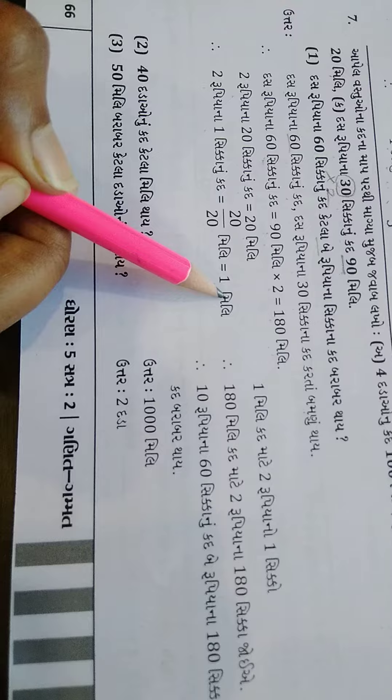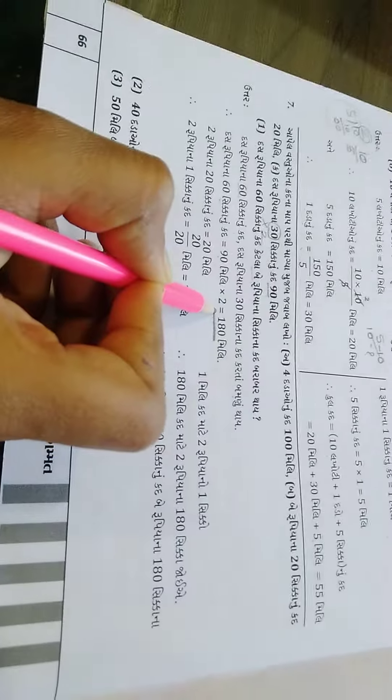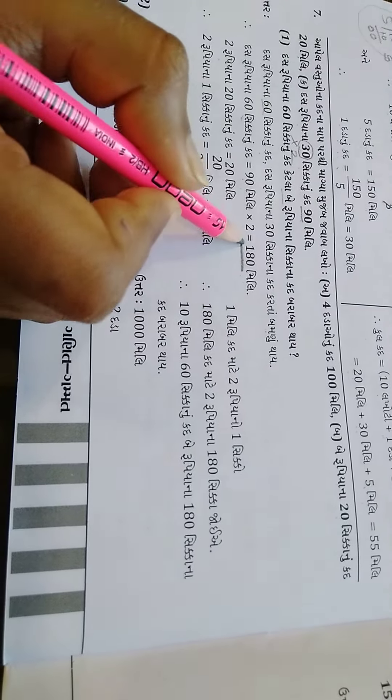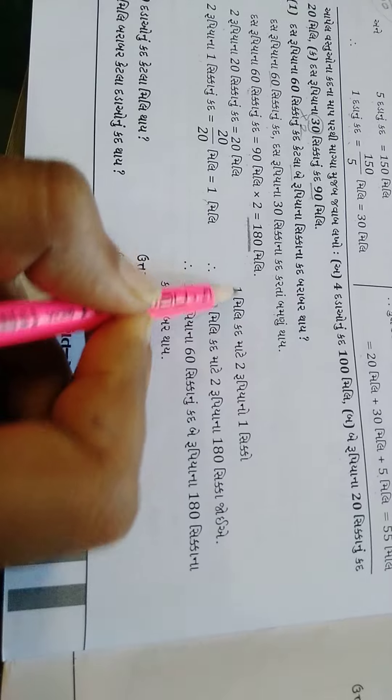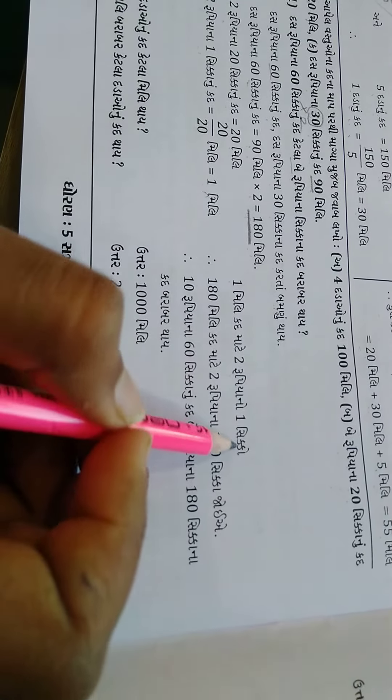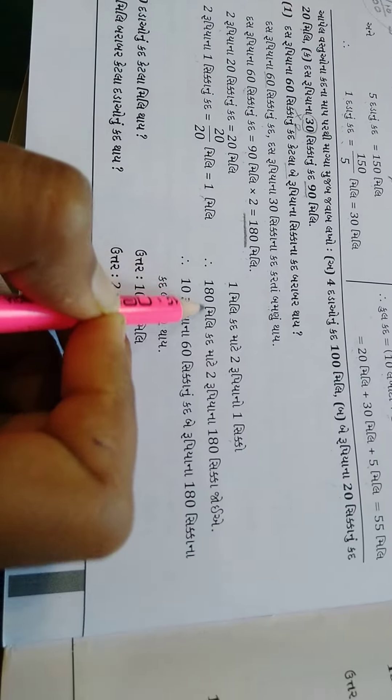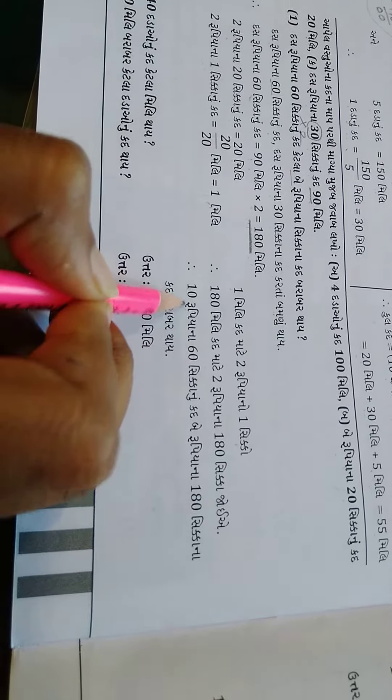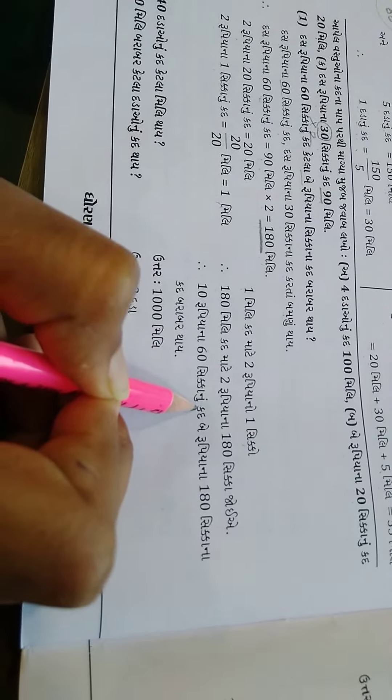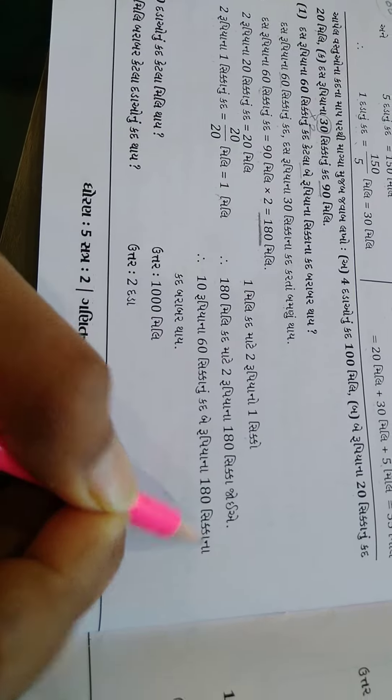એટલે એક સીકાનું કદ એક મીલી થઈ બરાબર તો આપણે હવે જોયે છે કટલા મીલી એક સીકો મીલી જોયે છે. તો એક મીલી મીલી માં એક સીકો આઉતો એક સીકો આઉતો એક સીકો એક સીકા જાંશે જોઓ એક મીલી કદ માટે બે રૂપ્યાનું એક સીકો જોતો હોય તો એક સીકો એક સીકો એક સીકા જોશે 10 રૂપ્યાના સીકાનું.